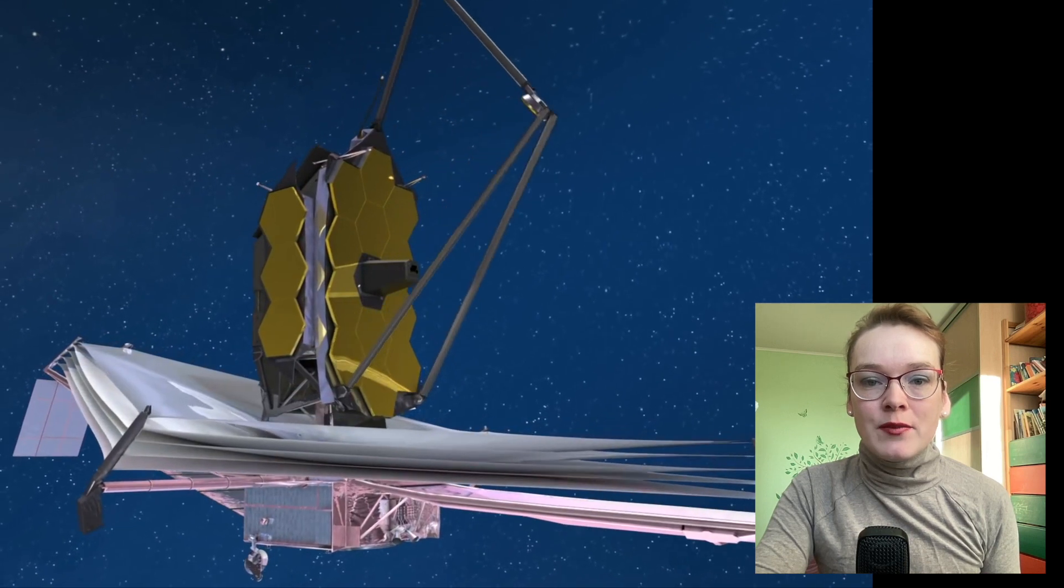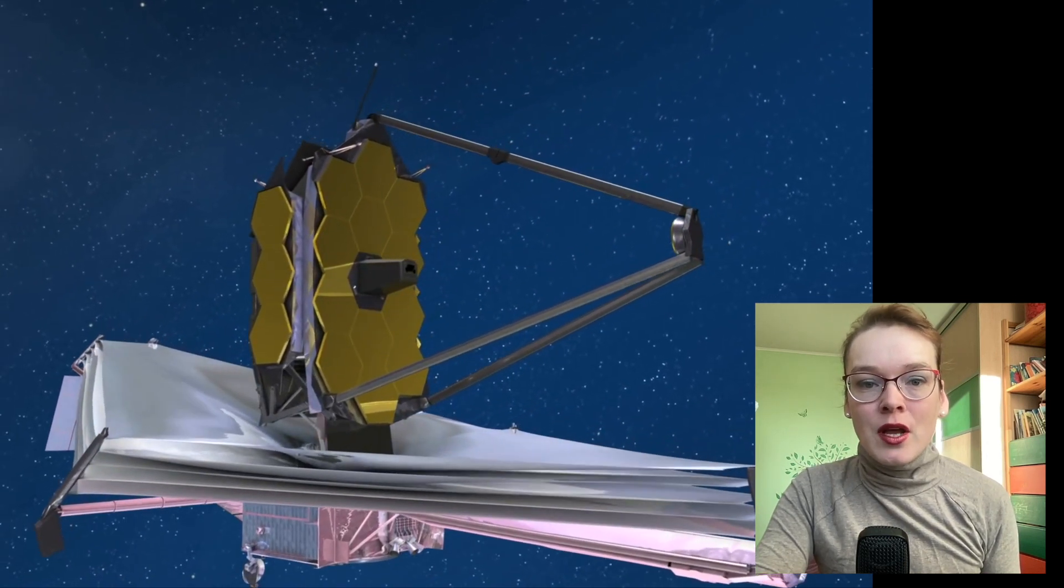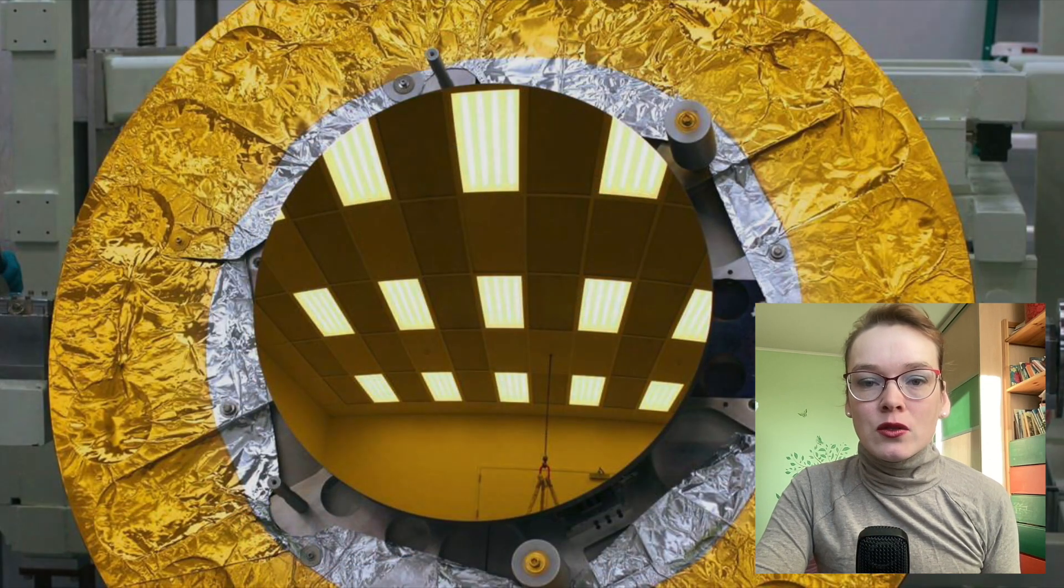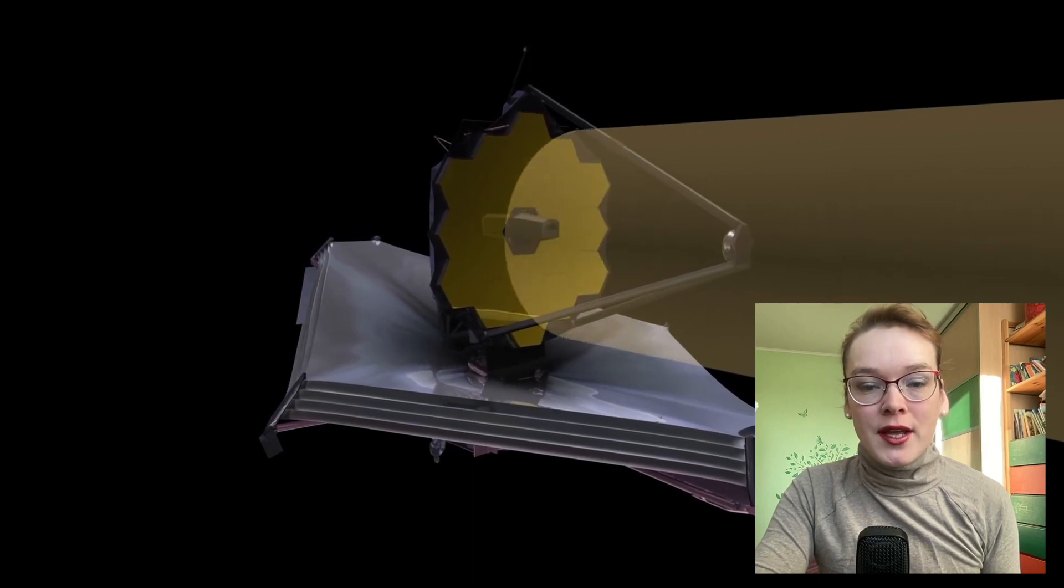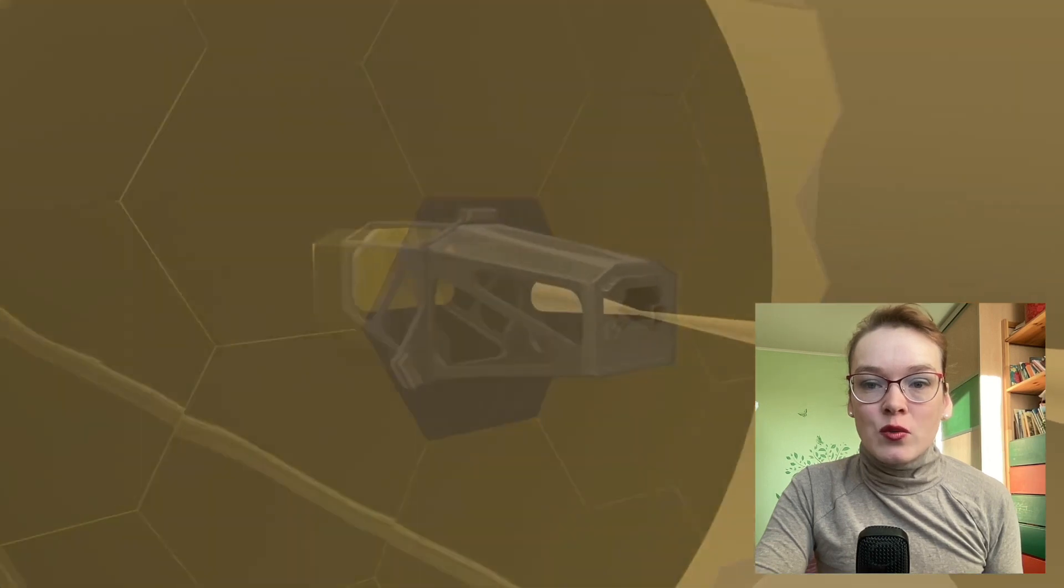In addition to the huge 18-segment primary mirror, James Webb has a round secondary mirror, 74 cm in diameter. It's called secondary because it represents a second surface from which light is reflected. The secondary mirror directs light toward the instruments of the telescope.